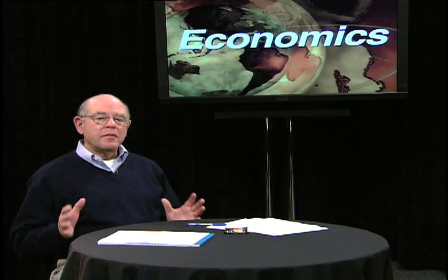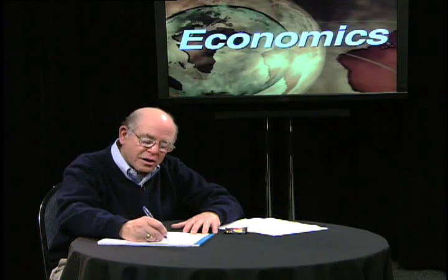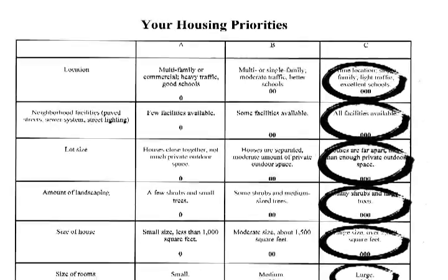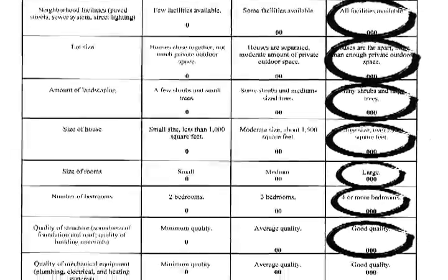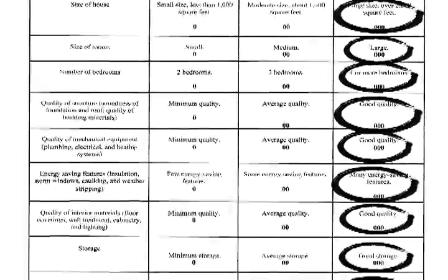It's important to emphasize to them that they should not worry about money — money is not an issue here. You give them about five minutes to think about what kind of house they want. Usually, once they have completed their discussions, the handout will look like they've circled column C for location, column C for neighborhood facilities, and column C across all rows. We told them to look at what they wanted and not worry about money, so that's what they do.